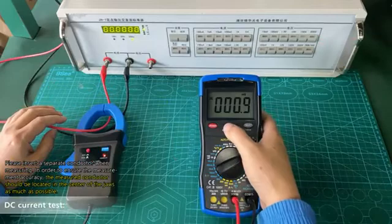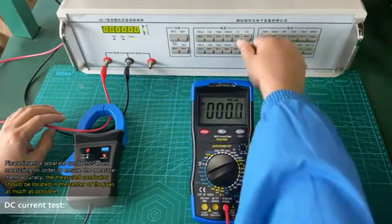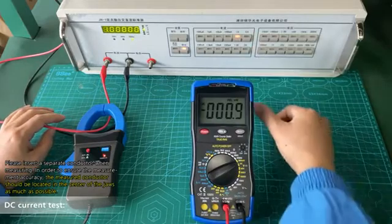In order to ensure measurement accuracy, the measured conductor should be located in the center of the jaws as much as possible.